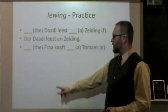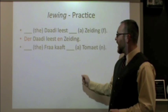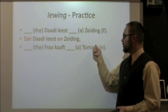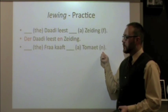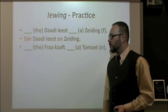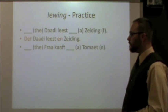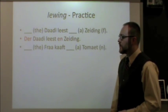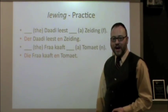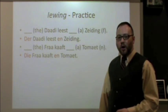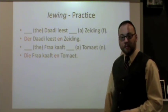Here's another one. This time give the correct form of 'the' up front and 'a' in the back. Our noun is 'Tomaet,' which is neuter. 'Fra' is our subject — we covered that in family terms. If you do it correctly, you get 'Die Fra koft en Tomaet.' The woman is buying a tomato.